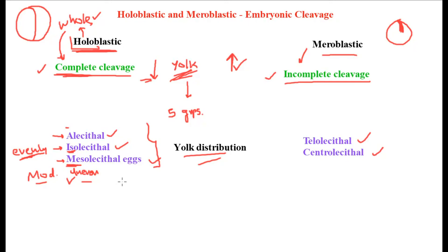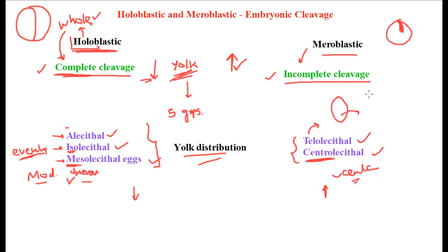So alecithal is almost negligible yolk, isolecithal is very less and evenly distributed, and mesolecithal is moderate and unevenly distributed — these three types have very low yolk content. On the other hand, telolecithal and centrolecithal eggs have a really high amount of yolk. In centrolecithal eggs, the high amount of yolk is located in the center of the cell. In telolecithal eggs, the high amount of yolk is present at the vegetal pole — the pole where yolk content is concentrated, as opposed to the animal pole.